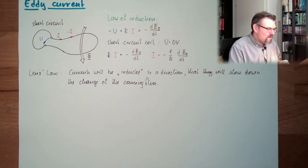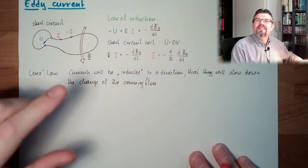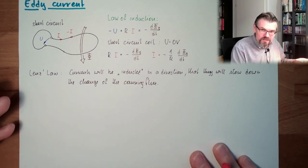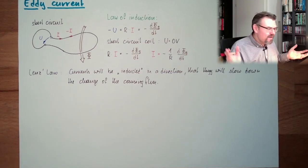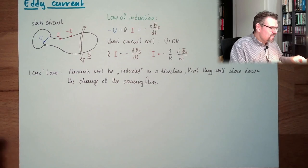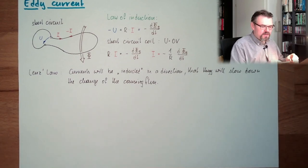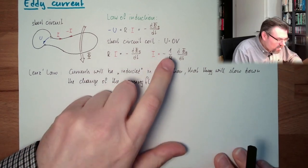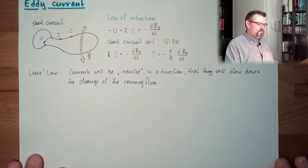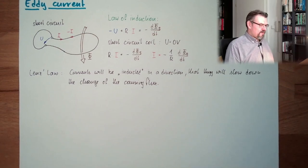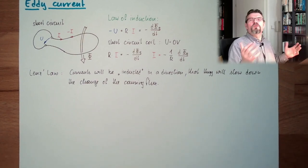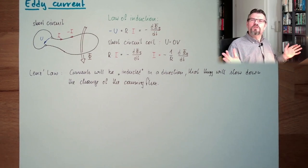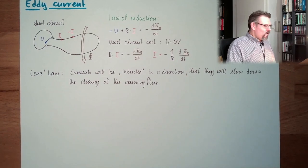Current will be inducted in a direction that they will slow down the change rate of the causing flux. But they will not succeed, of course. Because if they slow down the change rate, then less voltage is inducted, less current is flowing and the slow down is not that high. So there will be a balance. The current will simply limit the change rate, depending on the resistance of the coil.